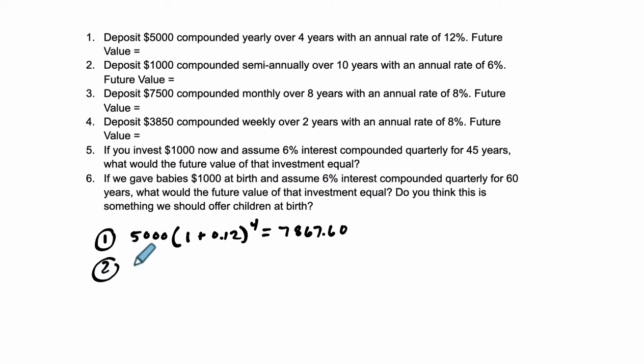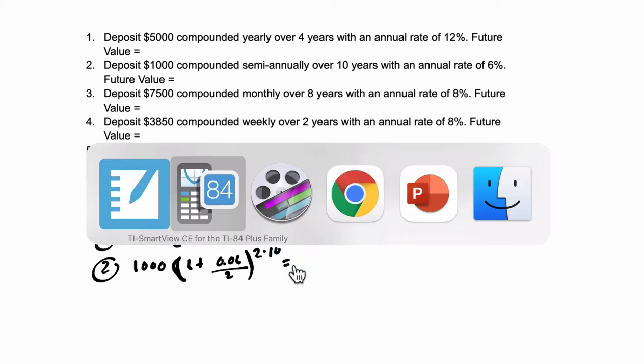The second one says we deposit $1,000 semi-annually now at 6%. So it's 0.06. But then we divide it by 2 because we don't give 6% at once. We give 3% twice, essentially. And then we do that for 10 years. So let's check it out.